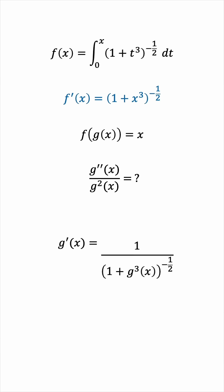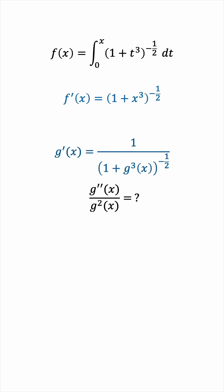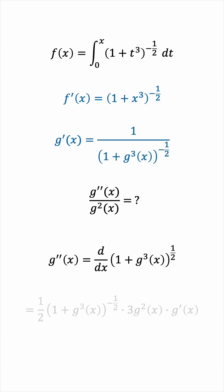With this, we are able to take a second derivative to find g double prime. We can use the chain rule twice. We'll bring the power down, subtract the power by 1, and then multiply by the derivative of the inside. This is applying the chain rule, but the inside derivative itself involves the chain rule as well.